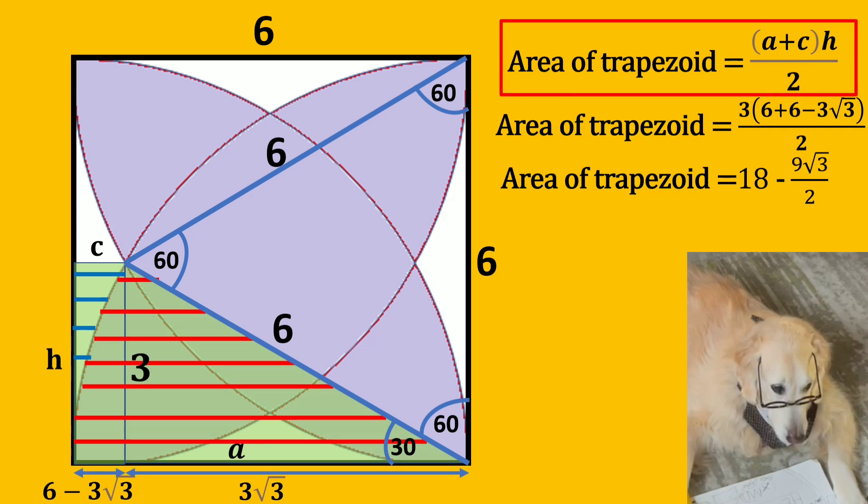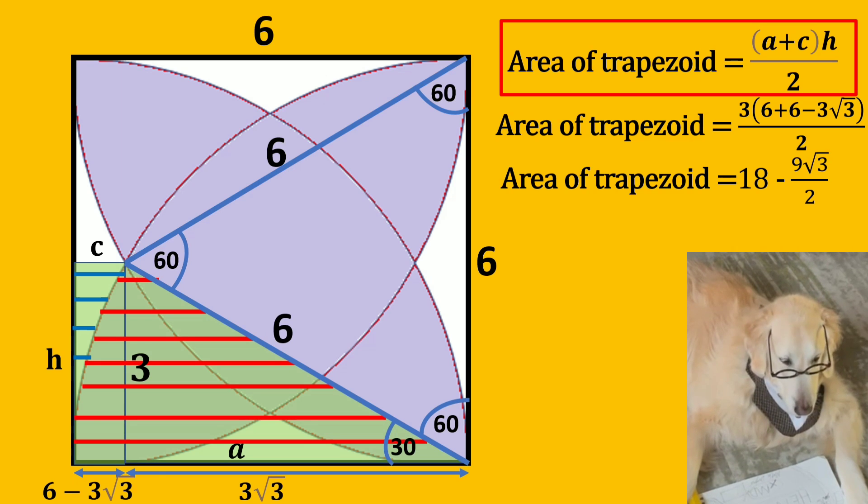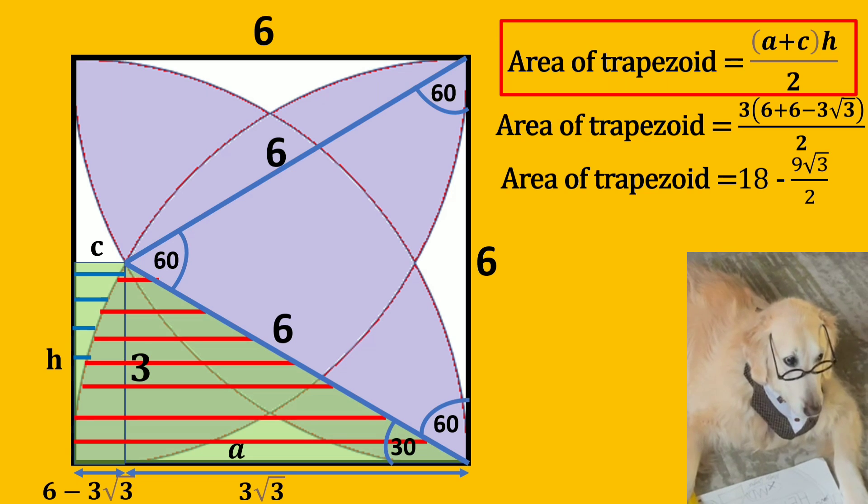So now we can calculate the area of trapezoid. Area of trapezoid is equal to height times sum of the bases divided by 2. So now we get 18 minus 9 times square root of 3 over 2.